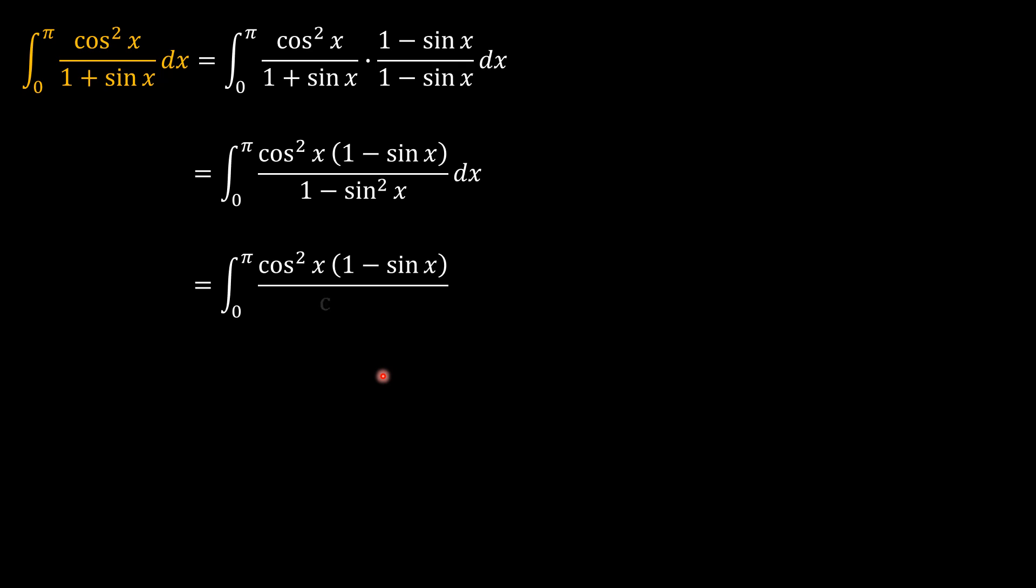And so our problem becomes the integral from x equals 0 to x equals pi of 1 minus sine x, which is x plus cosine x with limits being 0 and pi.